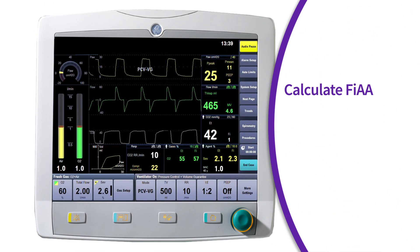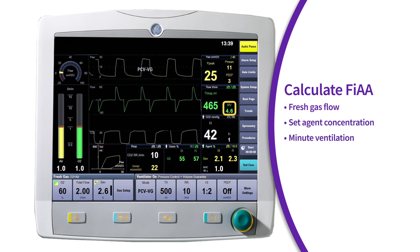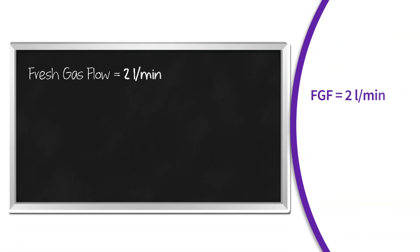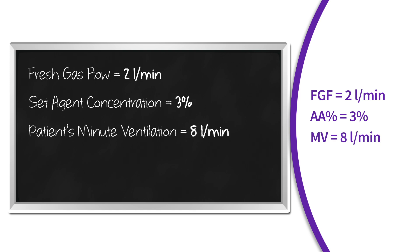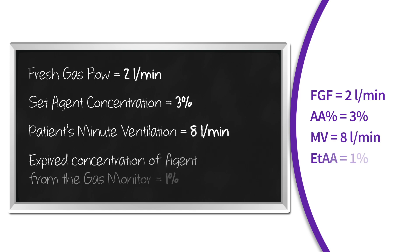Here are the four parameters needed for the calculation: the fresh gas flow, the set agent concentration, the patient's minute ventilation, and the expired concentration of agent from the gas analyzer. Let's put values to these parameters: fresh gas flow at 2 liters per minute, set agent concentration at 3%, patient's minute ventilation is 8 liters per minute, and the expired concentration of agent from the gas monitor is 1%.